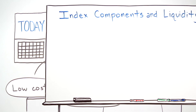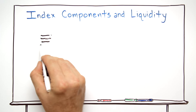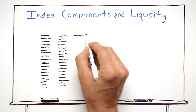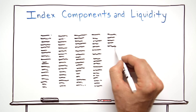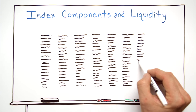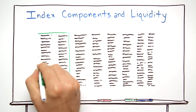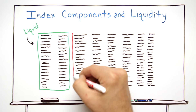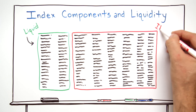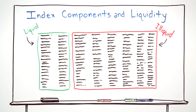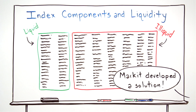Recognising the difficulty and cost of building a portfolio to track an index that consists of thousands of bonds, many with limited trading volumes, the market developed liquid fixed income indices.